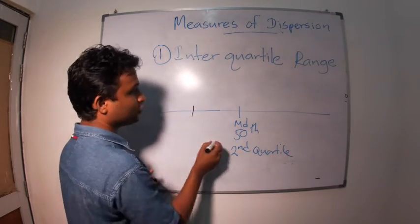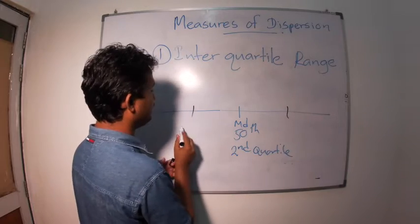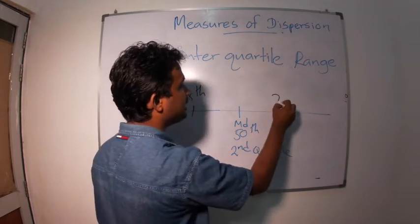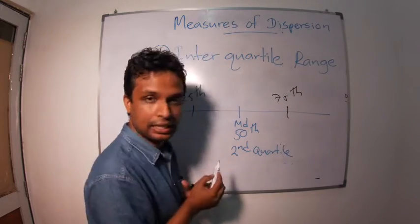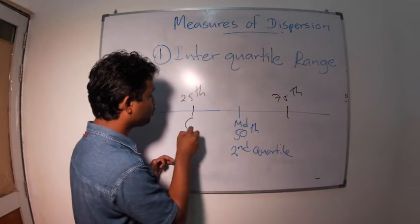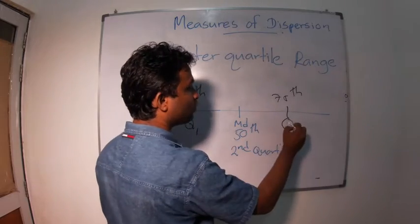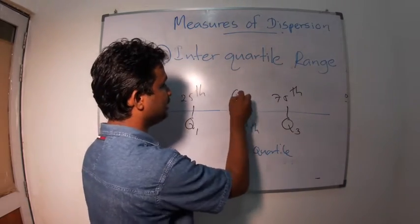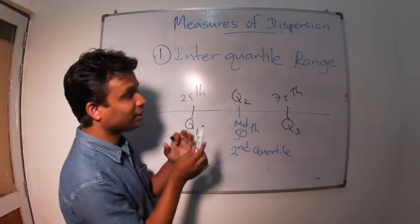That is 1st quartile and 3rd quartile at the position of 25th centile and 75th centile. So this is 1st quartile we named as Q1. The 3rd quartile we named as Q3. And the 2nd quartile is Q2.